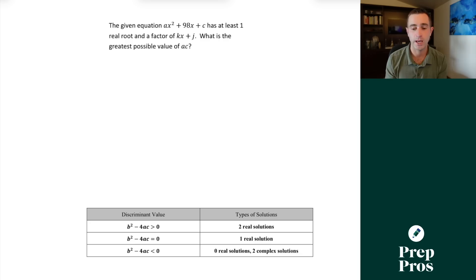Now, the way you're going to be able to spot you're dealing with a discriminant question is you're going to see a quadratic, and it's going to talk about the number or type of solutions. Here, when we see the given equation, ax squared plus 98x plus c has at least one real root, roots are synonymous with solutions. So that tells me it's a discriminant question.